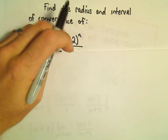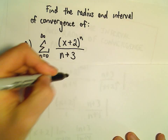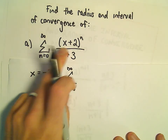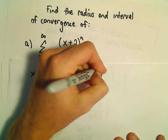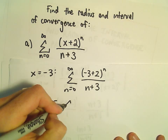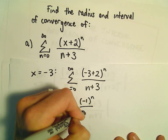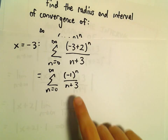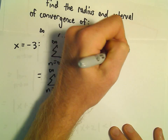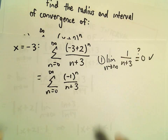If we test x equals negative 3 in our series, plugging in negative 3, we have the series from n equals 0 to infinity of negative 3 plus 2 raised to the n over n plus 3. This gives us a nice alternating series: negative 1 raised to the n over n plus 3. We have to think about two things. First, does the limit as n goes to infinity of 1 over n plus 3 equal 0? Well, it definitely does.